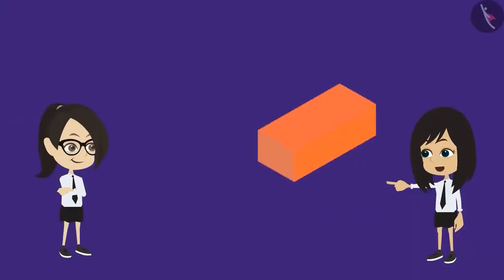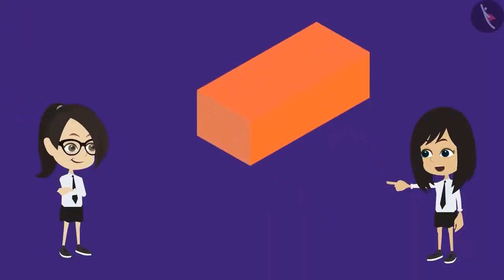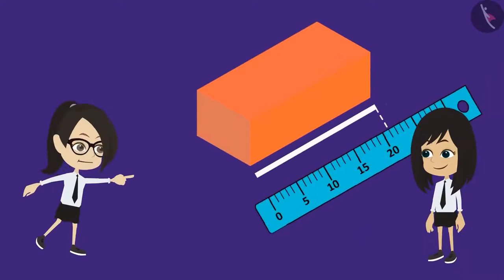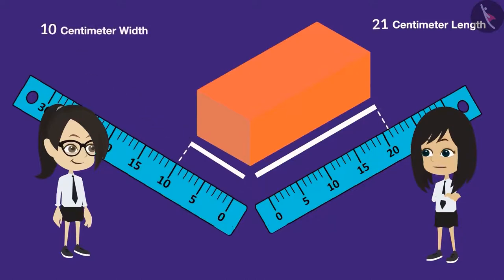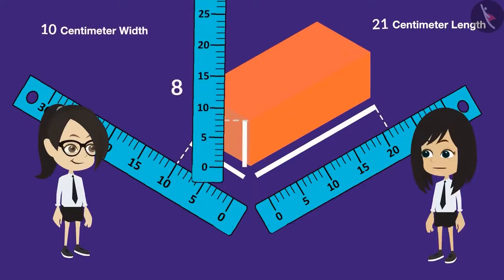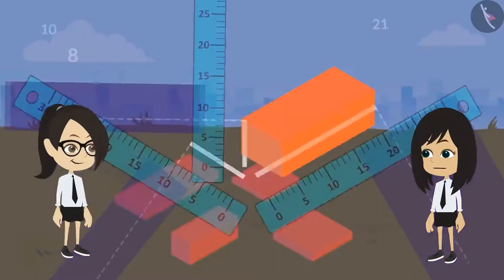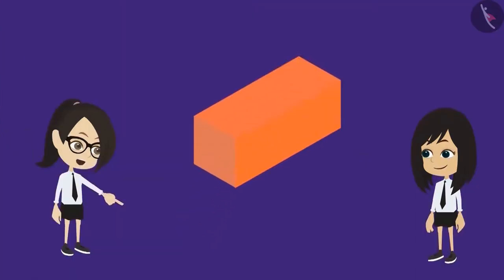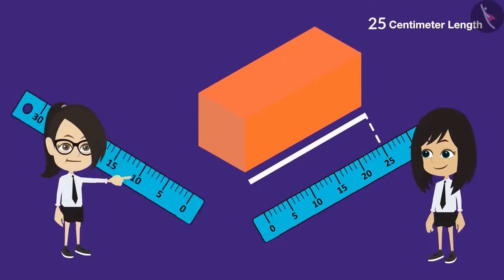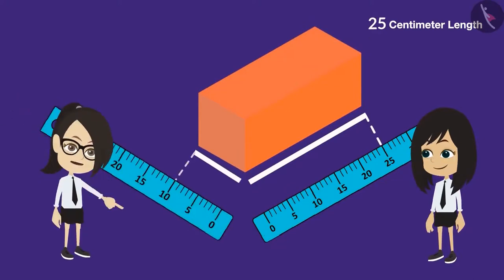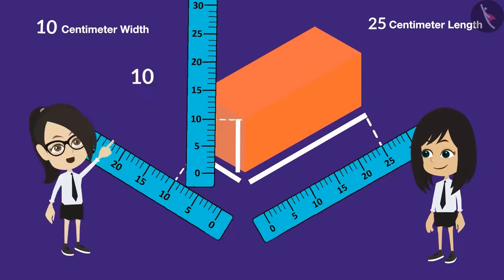First, let's measure the length of this brick. The length of this brick is 21 cm. The breadth is 10 cm and the height is 8 cm. Now let's measure this one. The length of this brick is 25 cm. The breadth of this brick is 10 cm and the height is also 10 cm.